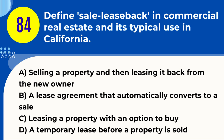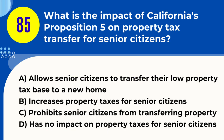Question 84. Define sale leaseback in commercial real estate and its typical use in California. A. Selling a property and then leasing it back from the new owner. B. A lease agreement that automatically converts to a sale. C. Leasing a property with an option to buy. D. A temporary lease before a property is sold. Answer: A. Explanation. A sale leaseback is a transaction in commercial real estate where the owner sells the property and then leases it back from the new owner. This arrangement is often used in California as a financing strategy, allowing the original owner to free up capital while continuing to use the property for their business operations.